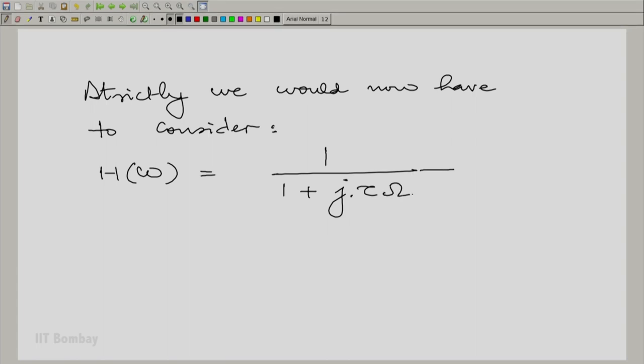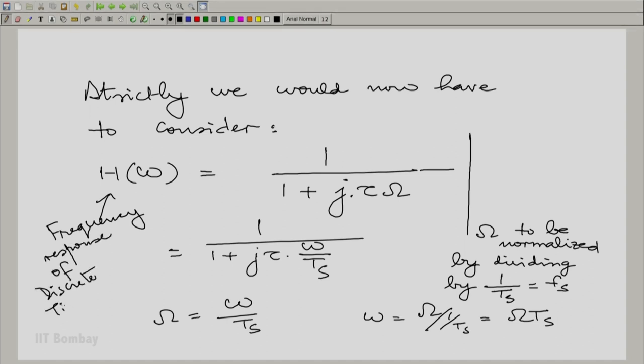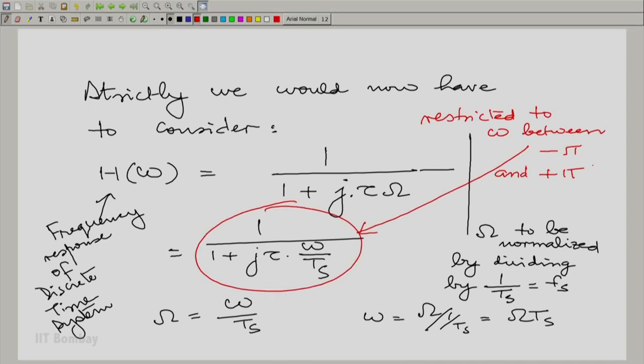Now, what would in principle we would have to do is the following. J tau capital omega and capital omega has to be normalized. How do you normalize? You divide by the sampling frequency. That means, you put omega is equal to small omega. I mean, is omega divided by 1 by Ts, which is omega multiplied by Ts. So, capital omega is small omega divided by Ts. This is how we obtain the expression for capital H of omega that is the frequency response of the discrete time system. But then, this should be restricted. It is not just for all small omega. This is to be restricted. So, it is like this.